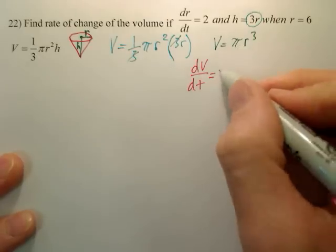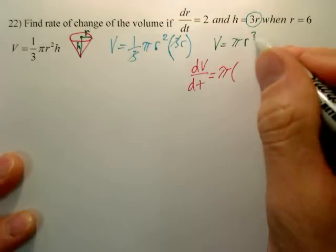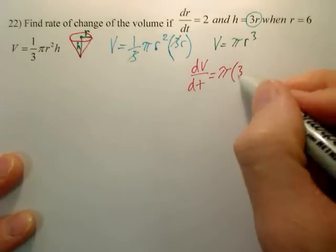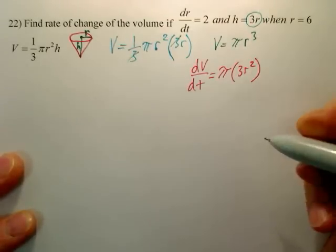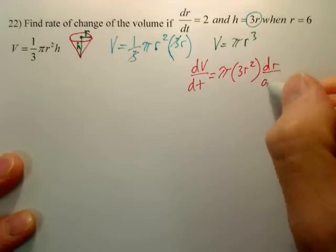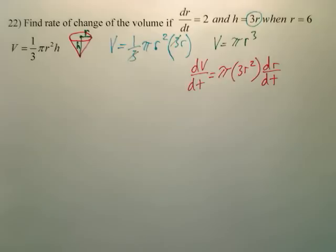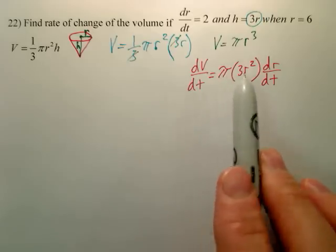Understand that's pi, it's a number. It relaxes, it stays. You take, deriving this becomes 3r squared. But then you derive the r in respect to time, so you have dr/dt. Now that right there is the derivative in respect to time.